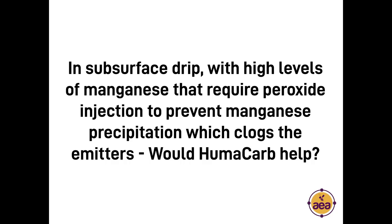Chad Wall asked: in subsurface drip with high levels of manganese that require peroxide injection to prevent manganese precipitation clogging emitters, would Humicarb help? I don't know — it's possible. We could test it in a jar solution pretty easily. I know that it does help for a similar problem with iron — we're able to inject Humicarb and prevent iron oxidation from happening once it leaves spray nozzles. So it's possible, but we'd have to test it and find out.